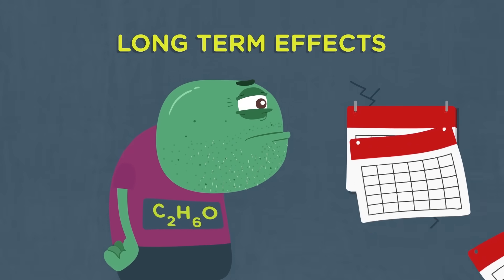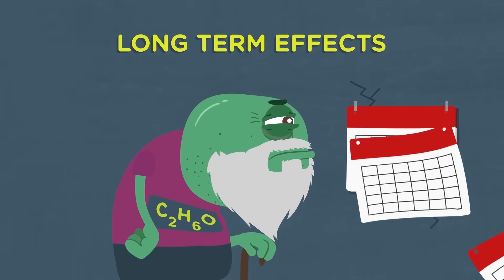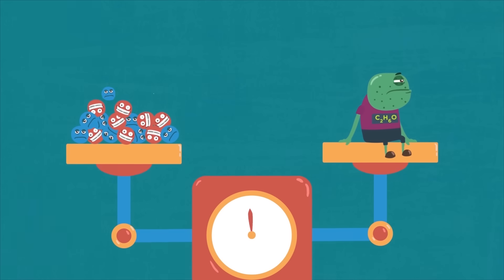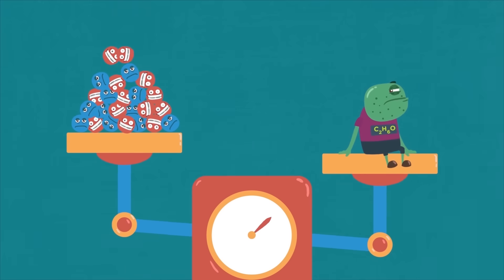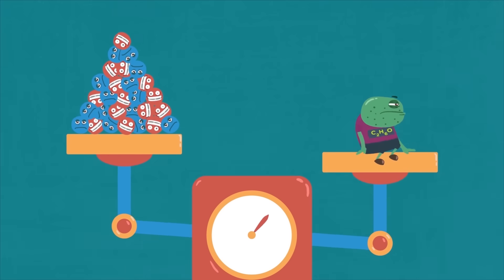But if a person continues drinking too much, it can have serious long-term effects. The brain will begin to chemically compensate for the way alcohol affects it and in time will start to rely on alcohol to function normally. This can lead to dependency, addiction, and other serious health problems.